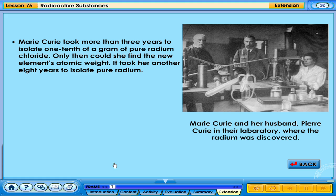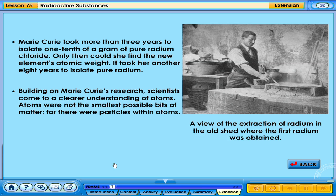Marie Curie took more than three years to isolate one-tenth of a gram of pure radium chloride. Only then could she find the new element's atomic weight. It took her another eight years to isolate pure radium. Building on Marie Curie's research, scientists came to a clearer understanding of atoms. Atoms were not the smallest possible bits of matter, for there were particles within atoms.